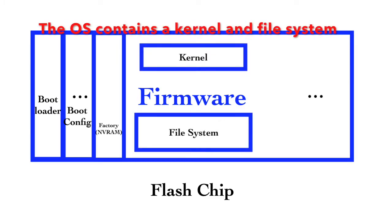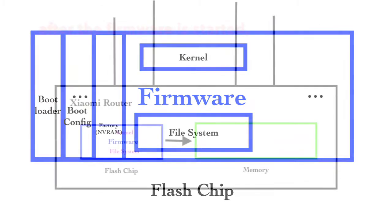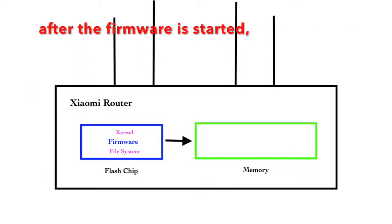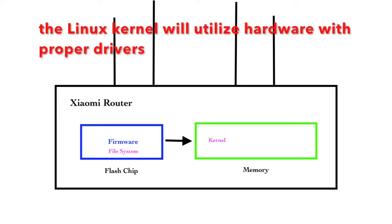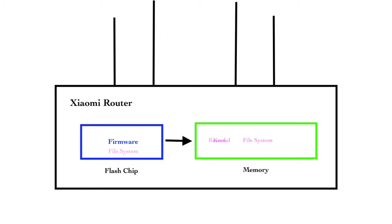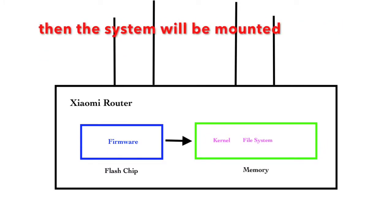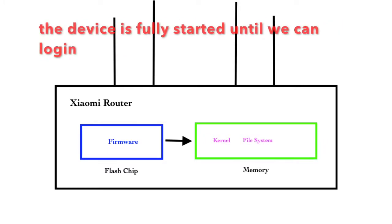The operating system contains a kernel and file systems. After the firmware is started, the kernel will first be loaded into memory. The Linux kernel will utilize the hardware with proper drivers. Then the system will be mounted. The device is fully started once we can log in.